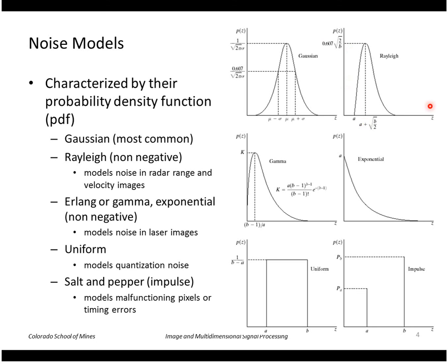Rayleigh noise models noise in radar and velocity images; gamma or exponential functions model noise in laser images. Another common one is the uniform PDF, which is flat from point a to point b — a good model for quantization noise. If we digitize a value to an integer, our error is likely somewhere in the range of minus 0.5 to plus 0.5 with equal probability. Finally, salt and pepper noise, or impulse noise, has two spikes in the PDF at a and b, modeling malfunctioning pixels or timing errors.